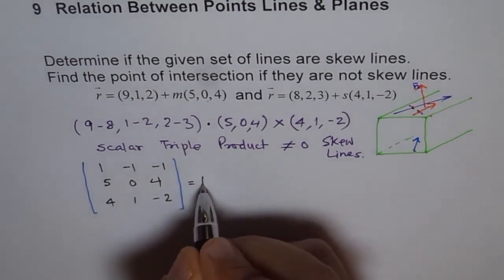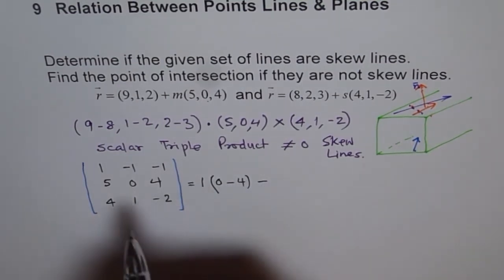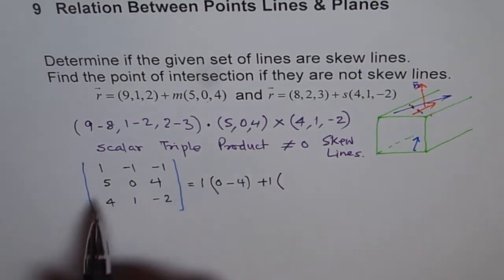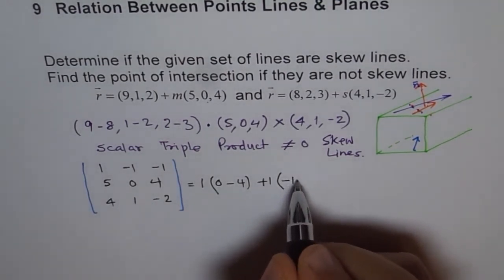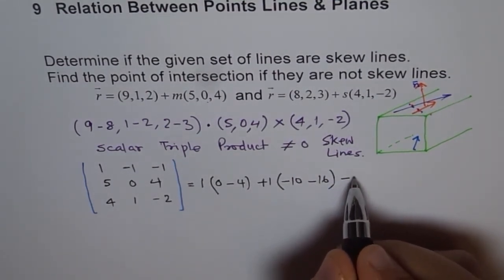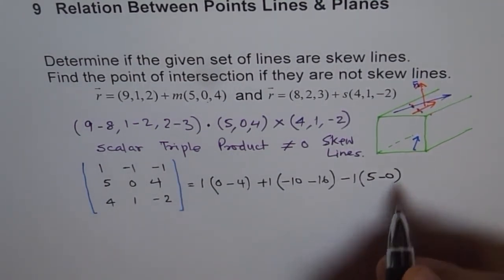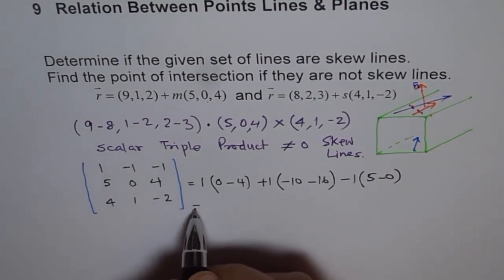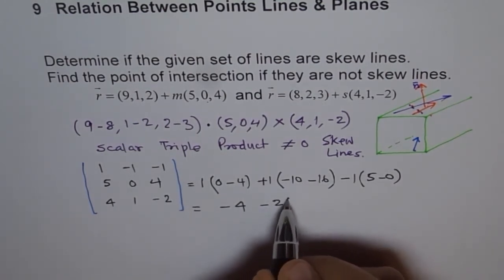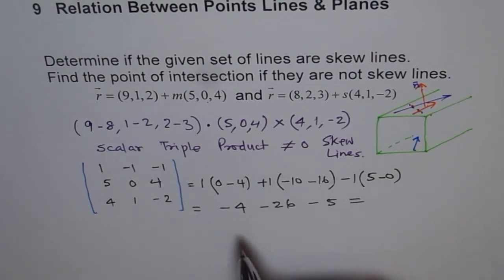Let us figure it out. So, just 1 time, 0 times anything is 0, minus 4 times 1 is 4. Minus. Minus 1 time, this is minus 1. So, we will make it plus. Minus 1 time. 5 times minus 2 is minus 10, minus 4 times 4 is 16. And then, minus 1 time. Let me write 1. 5 times 1 is 5, minus 0 times anything is 0. And let us figure it out. How much is this? This is equal to minus 4. And this is minus 26. And this is minus 5. Clearly, it is not 0. So, minus 35.